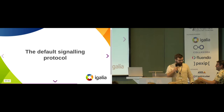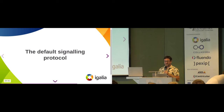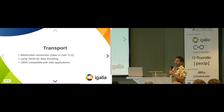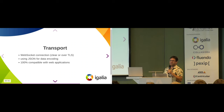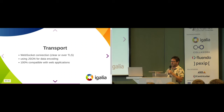Thibault and Mathieu talked about the new signaling protocol integrated into all those high-level elements. This protocol is the default one used directly if you run a pipeline with gst-launch and use webrtcsink or webrtcsrc. It is based on WebSocket for transport and JSON for data encoding, making it very easy to write a portable client for it. One very interesting point is that this is 100% compatible with web applications, which is important since lots of people use the web as UI for video conferences or remote video access.